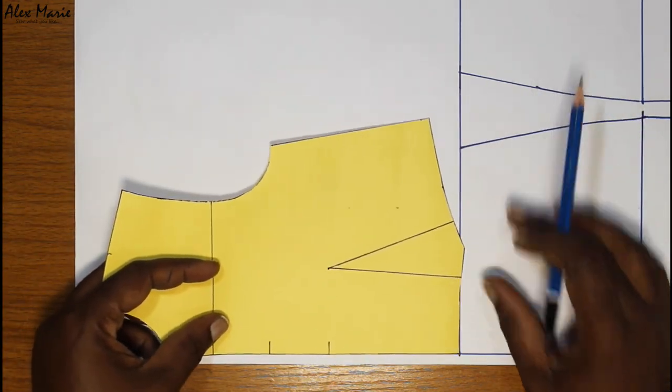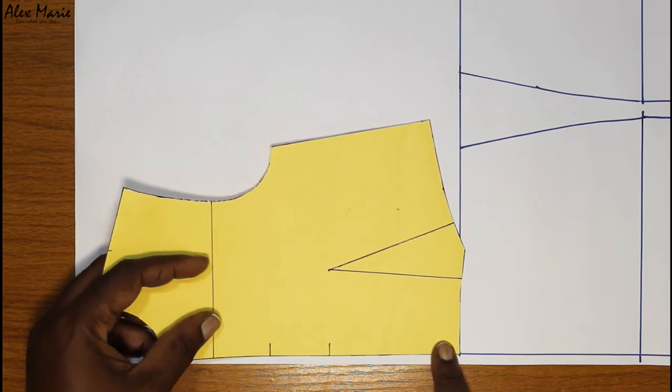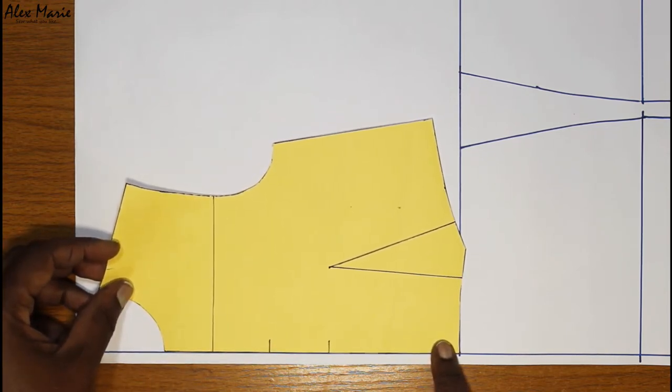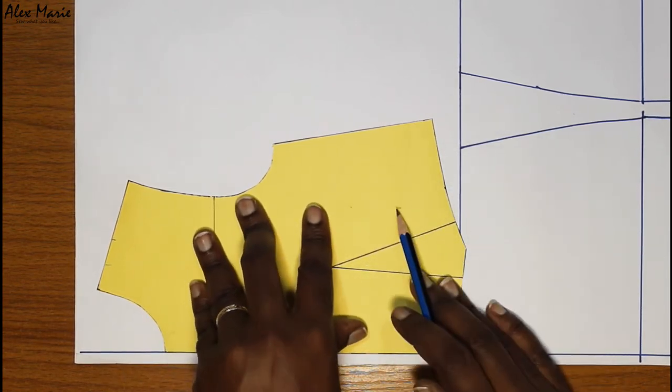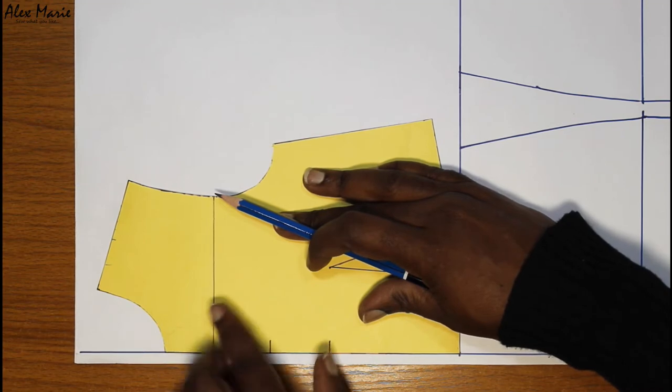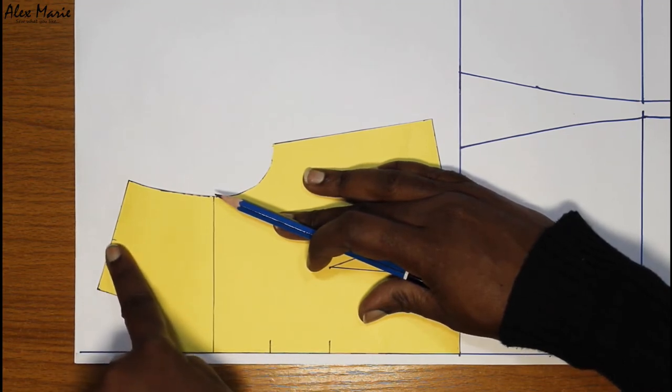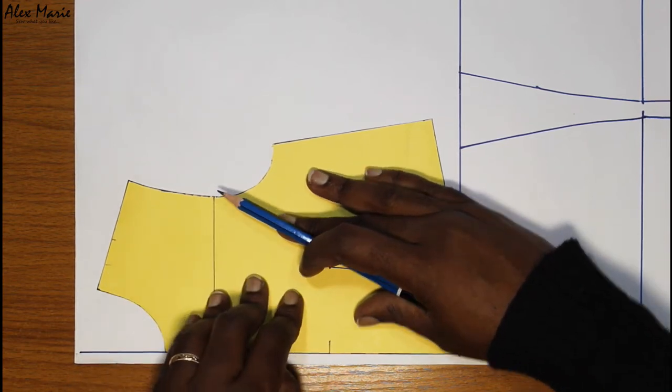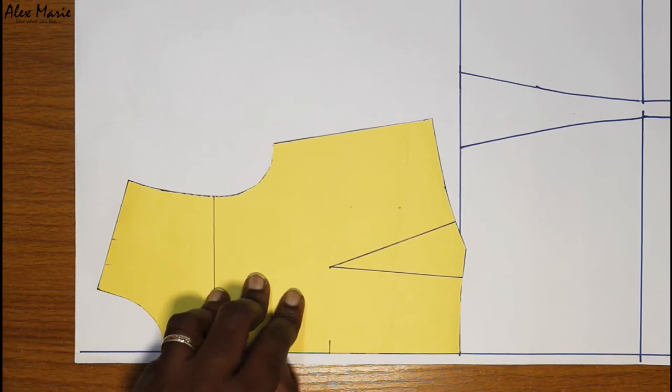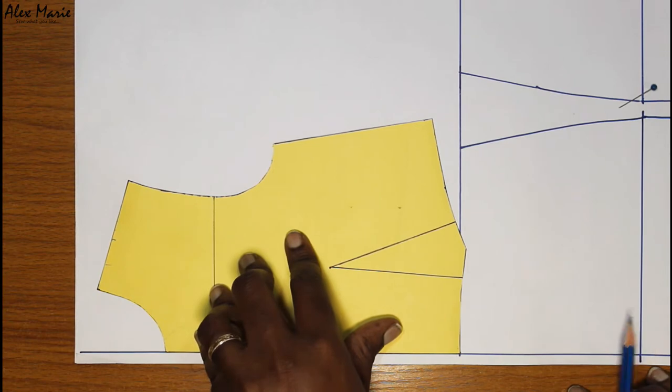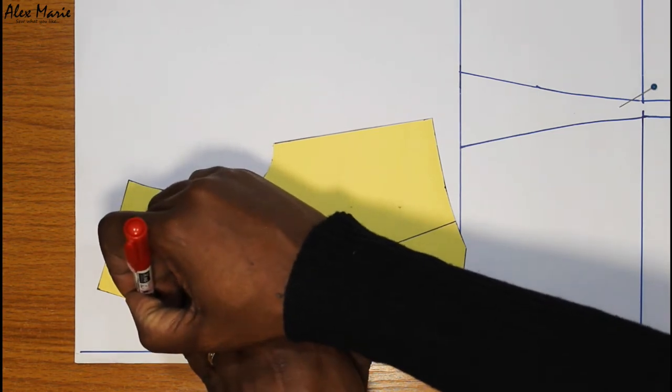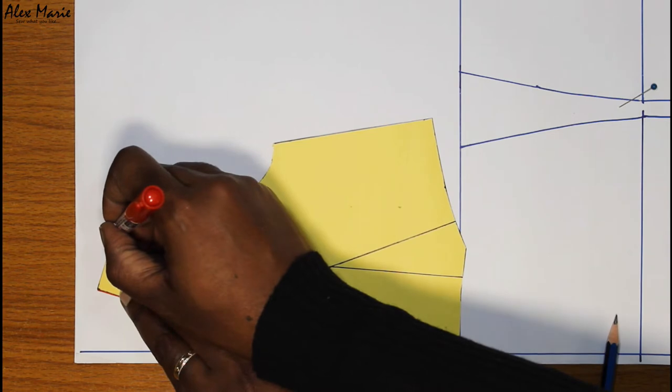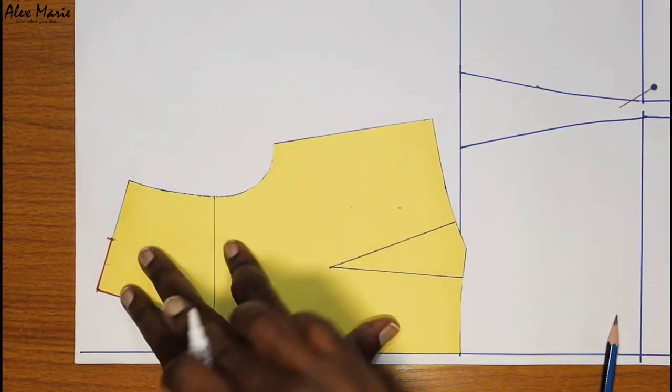Next, we're going to place this. Match it to the waist. Match it to the center front. And now we're going to trace. We're tracing all the way here, down the neckline and stopping at the shoulder.